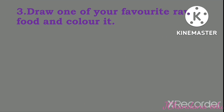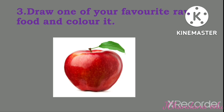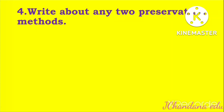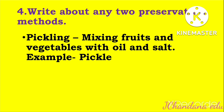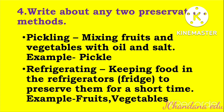Third question: Draw one of your favorite raw foods and color it. We can draw any one raw food, like apple or carrot. Fourth question: Write about any two preservation methods. Answer: Pickling – mixing fruits and vegetables with oil and salt, example: pickle. Refrigerating – keeping food in the refrigerator to preserve for a short time, example: fruits and vegetables.